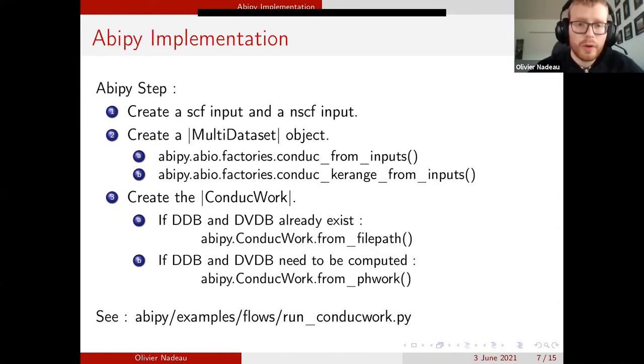Now, how can we start a calculation using Abipy? We can do it in three steps. In the first step, we'll create a self-consistent and a non-self-consistent input. In the second step, we'll use Abipy Factories function to create a multi-dataset object. At this step, we can choose if we want to use K-Range capabilities or not. And finally, we will create a conductwork object from this multi-dataset object.